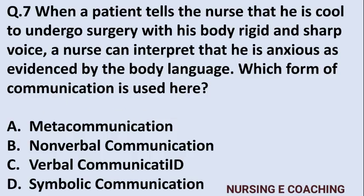Question 7: When a patient tells the nurse that he is cool to undergo surgery, but his body is rigid and his voice is sharp, the nurse can interpret that he is anxious as evidenced by body language. Which form of communication is used here? Option A: meta communication, Option B: non-verbal communication, Option C: verbal communication, Option D: symbolic communication. Answer is A — meta communication.